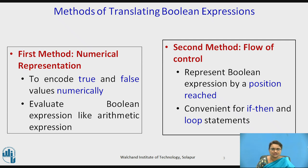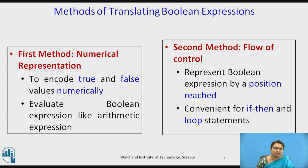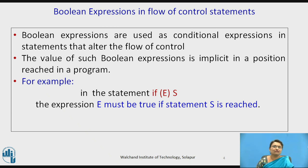In the second method, we represent the boolean expression by the position of execution of the statement. Whenever a particular condition is checked according to the boolean expression, based on the true or false value, the execution flow of the program is decided. Usually statements like if, if-else, loop statements, or switch-case statements use this approach. The value of the boolean expression is implicit — it is either true or false — and this value is used for the flow of control.